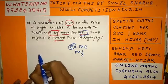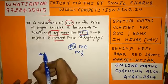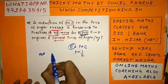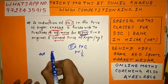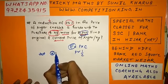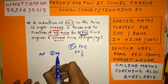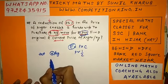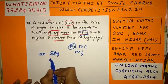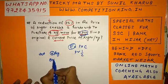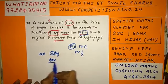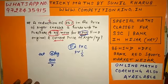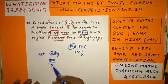Let's assume the original price of sugar is Rs. x per kg. Now she has Rs. 800, which means she will buy 800/x kg.